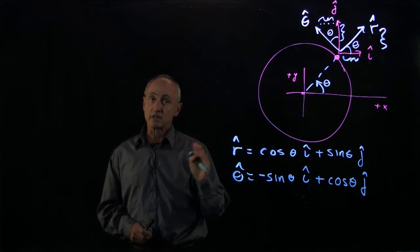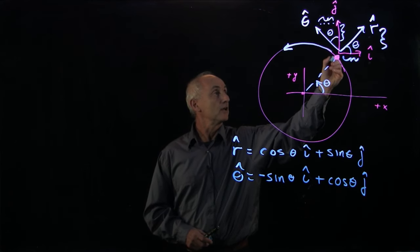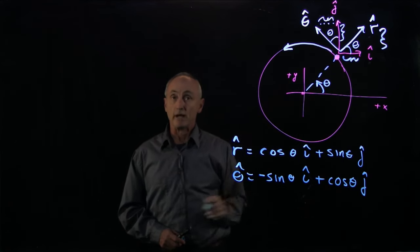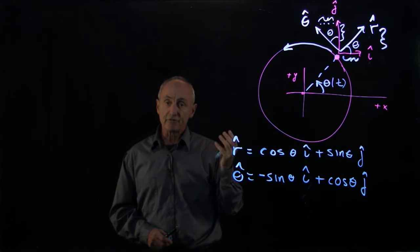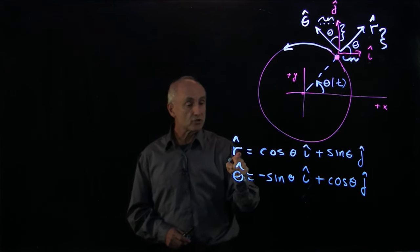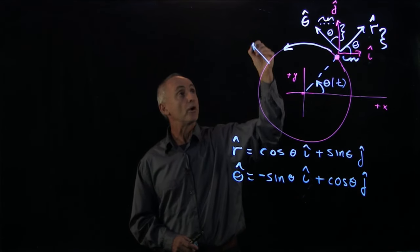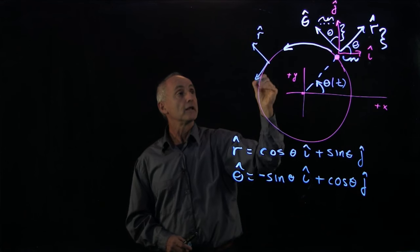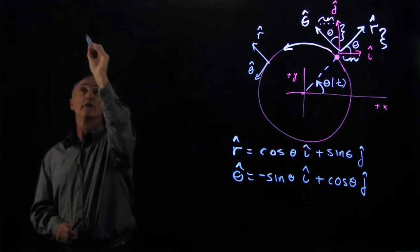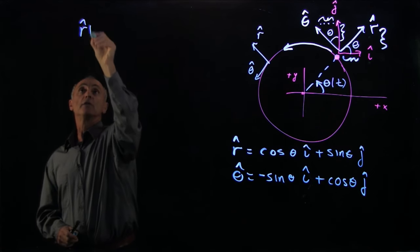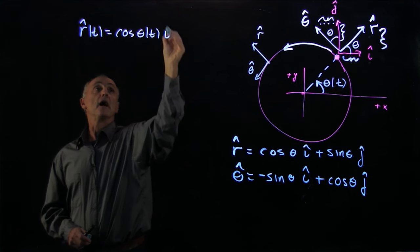Now, why is this significant? Because if we're describing the motion of an object, for instance, an object that's going around a circle, then our polar coordinate theta is a function of time. And so these unit vectors are actually changing in direction. We saw that before. Over here, r hat and theta hat point in different directions.